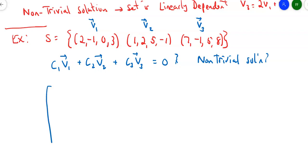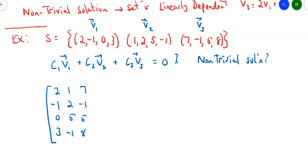Drop the vectors down the columns of a matrix. So the first column is 2, -1, 0, 3; the second is 1, 2, 5, -1; the third is 7, -1, 5, 8. And remember, we have the zero vector on the other side, so it's just a column of zeros.